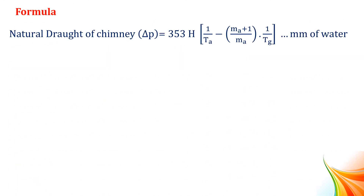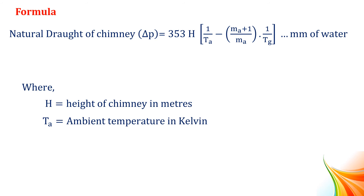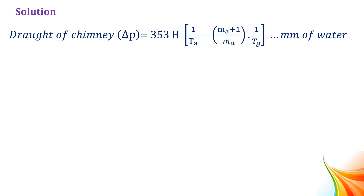Formula: The natural draught of chimney ΔP = 353H × [1/Ta − (Ma + 1)/(Ma × Tg)] mm of water. Where H is the height of the chimney in meters, Ta is the ambient temperature in Kelvin, Tg is the flue gas temperature in Kelvin, and Ma is the mass of air supplied per kg of fuel. Solution: ΔP = 353H × [1/Ta − (Ma + 1)/(Ma × Tg)] mm of water.